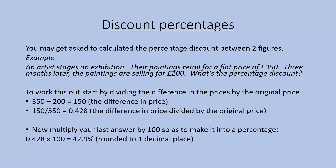Sometimes you may be asked to calculate the percentage discount between two figures. For example, an artist's paintings retail at £350 and three months later are selling for £200 — what's the percentage discount? First work out the price difference: £350 minus £200 equals £150. Then divide the price difference by the original price: £150 divided by £350 equals 0.428. Multiply that by 100 to convert to a percentage: 0.428 times 100 equals 42.9%, rounded to one decimal place.